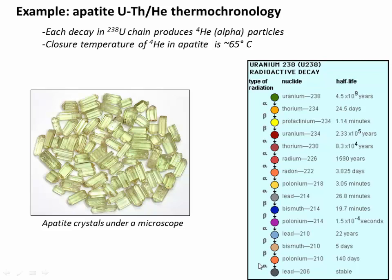The key idea is that those helium particles aren't retained in the apatite crystal until the crystal cools below roughly 65 degrees Celsius. So although uranium is decaying and releasing helium throughout the lifetime of the crystal, the helium gas doesn't start to be locked into the crystal until it cools below roughly 65 degrees Celsius. And that's when the clock starts.